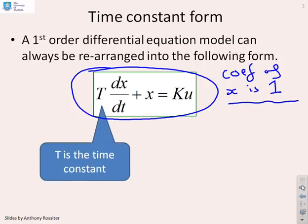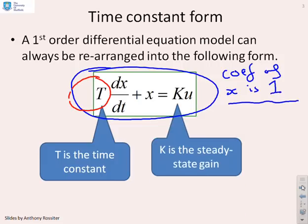When we do that, we get this particular coefficient, capital T, which multiplies the derivative, and that capital T is called the time constant. As you will see from the other videos on responses, that tells you something particular about how quickly the state x responds. You will also have this other coefficient, capital K, which multiplies on the input to the system. And it can be shown that capital K is the steady-state gain of the system, so it has a real meaning as well.